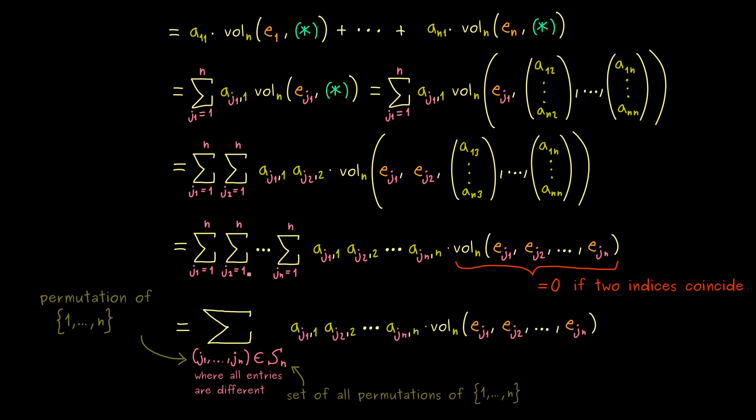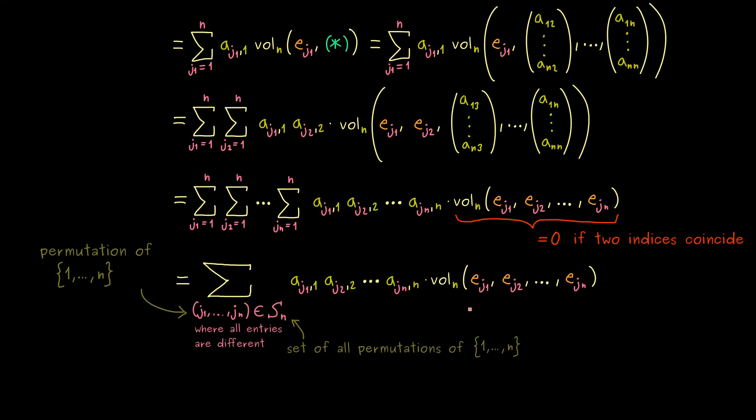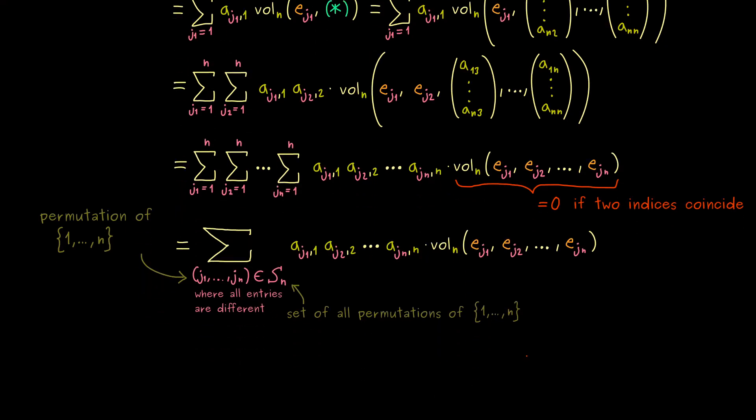Okay, so now you see our whole formula is even more compact now. However, we can make it even better if we use our last property of the volume form. Namely, now we know this volume with the canonical unit vectors is either 1 or minus 1.